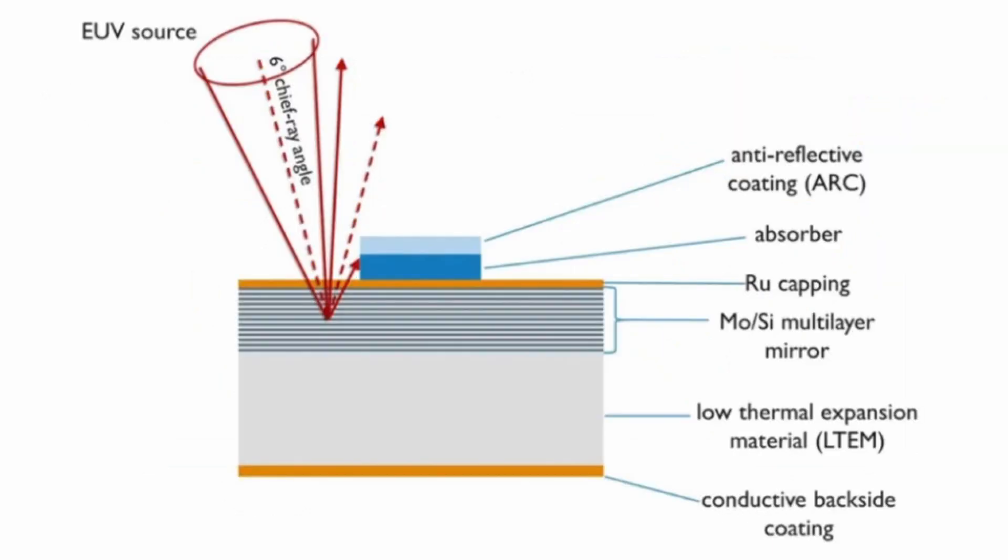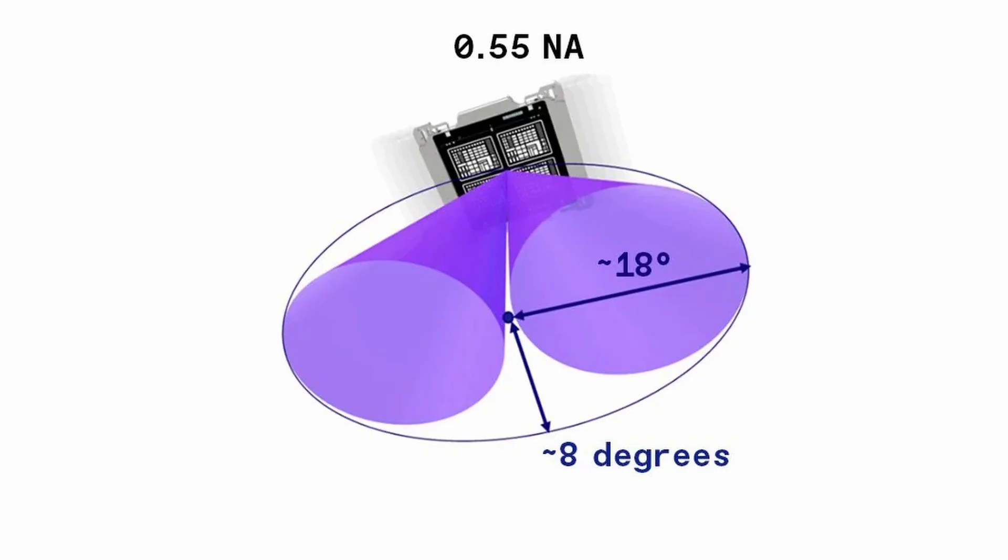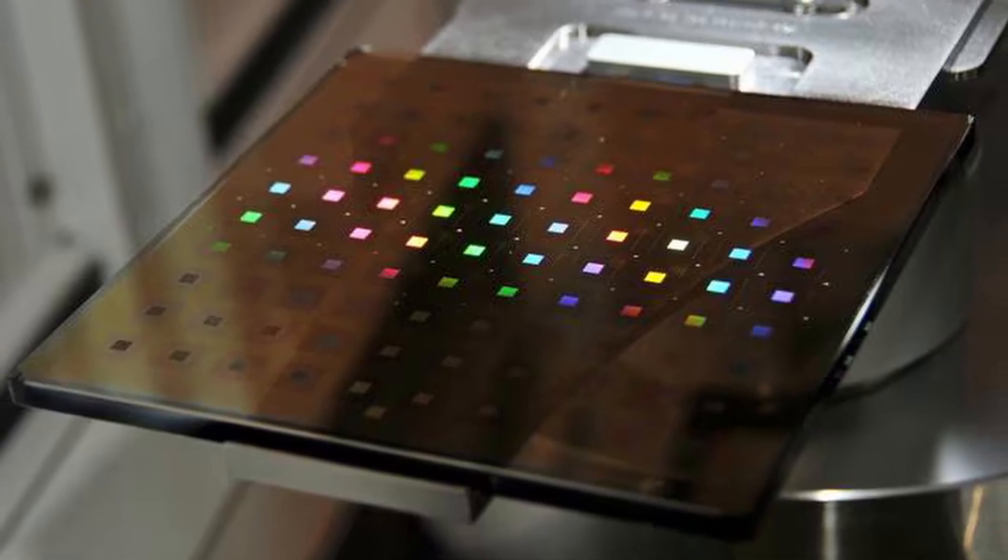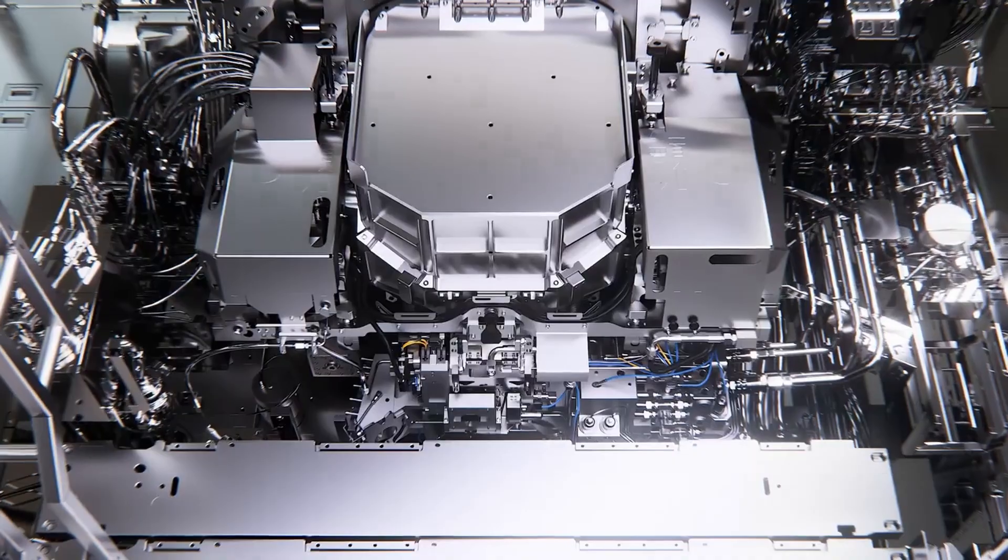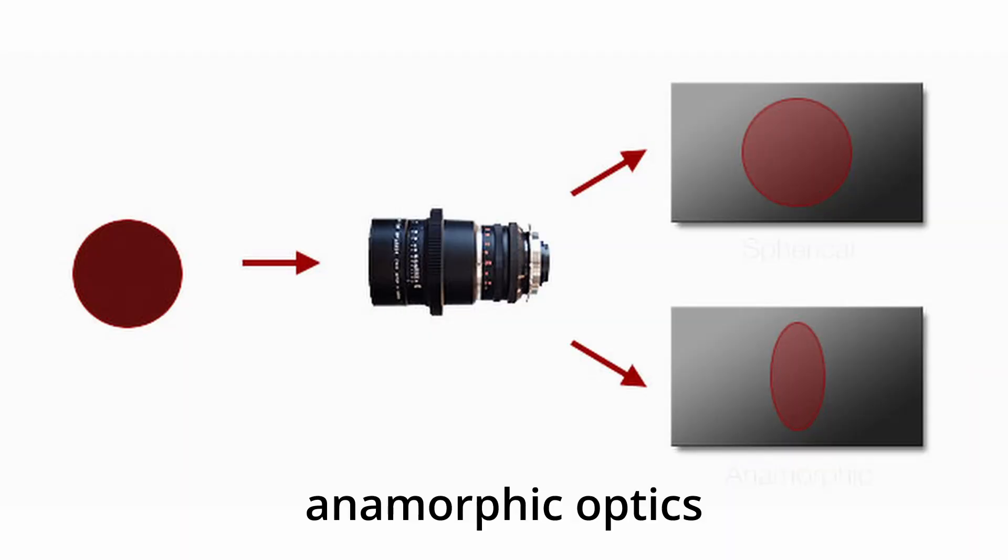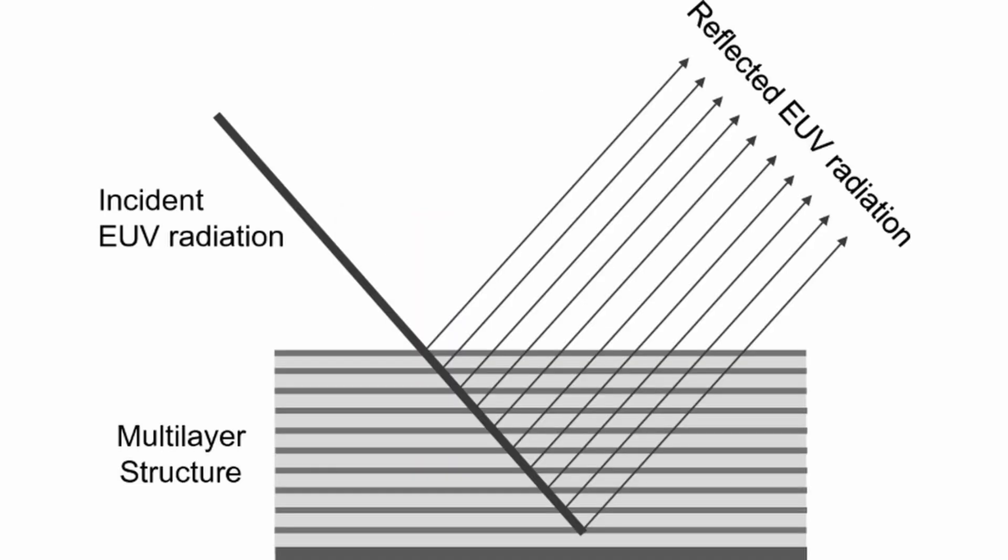At the larger angle, the reticle loses its reflectivity, so the pattern can't be transferred to the wafer. This issue could have been addressed by shrinking the pattern by eight times rather than the four times used in current EUV systems, but that would have required chip makers to switch to larger reticles. Instead, the high NA EUV uses an ingenious design, anamorphic optics. Rather than uniformly shrinking the pattern being printed, the system's mirrors demagnify it by four times in one direction and eight times in the other. That solution reduced the angle at which the light hit the reticle and avoided the reflection issue.